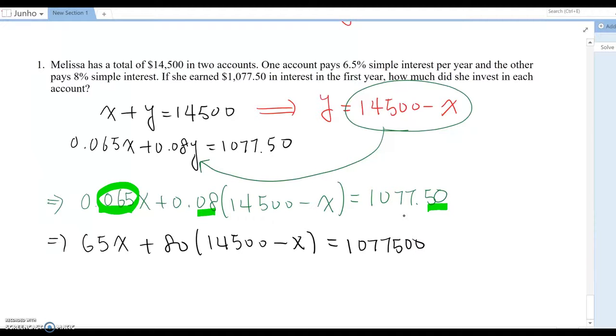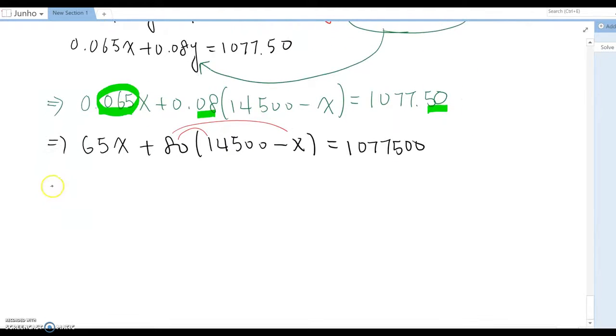So what could be next step? Yes, we distribute. We distribute. Then this becomes 65X plus maybe 1,160,000 minus 80X equal to 1,077,500.